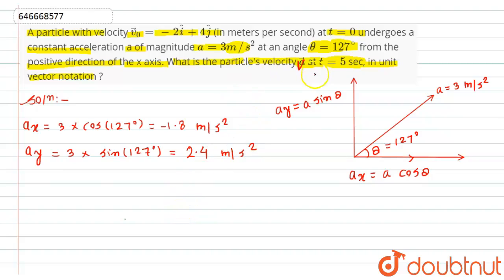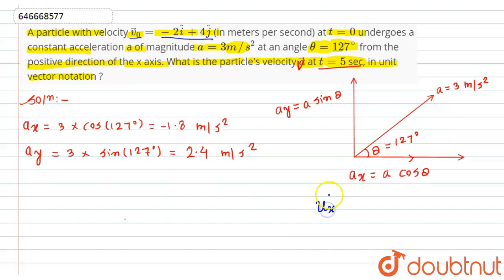According to the question, we have to find the velocity of the particle at time t = 5 seconds in unit vector notation. The initial velocity of the particle is given in vector notation as -2î + 4ĵ. So the x-component of initial velocity uₓ = -2 m/s, and the y-component of initial velocity uᵧ = 4 m/s.